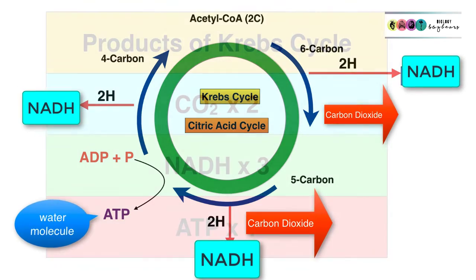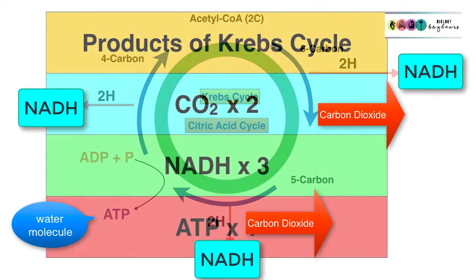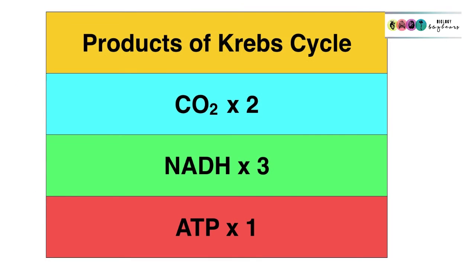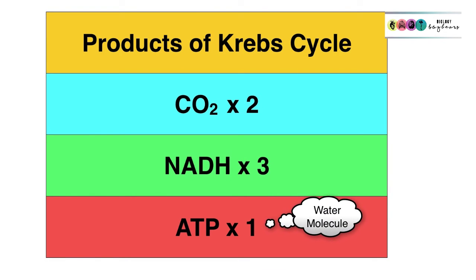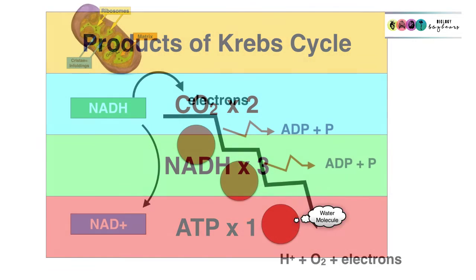That's the end of Krebs cycle. When one acetyl-CoA molecule enters Krebs cycle, two carbon dioxides are released, three NADH molecules are made, and one ATP is produced — don't forget the water molecule associated with that.